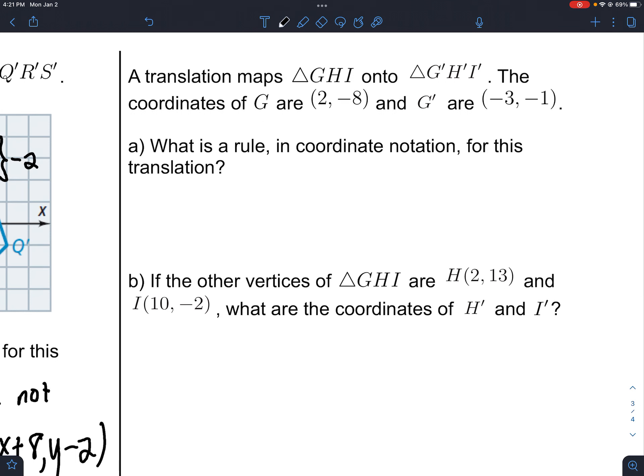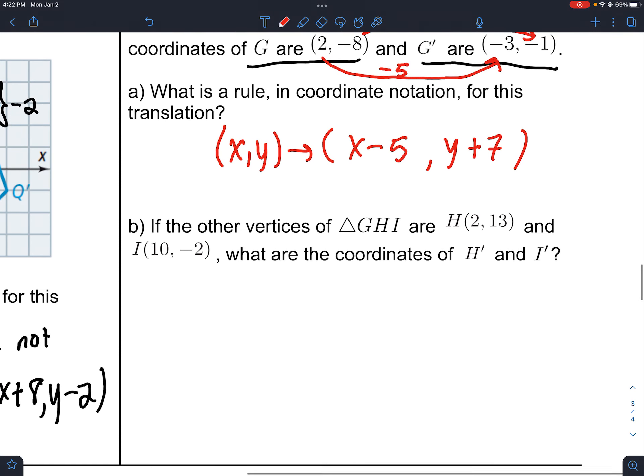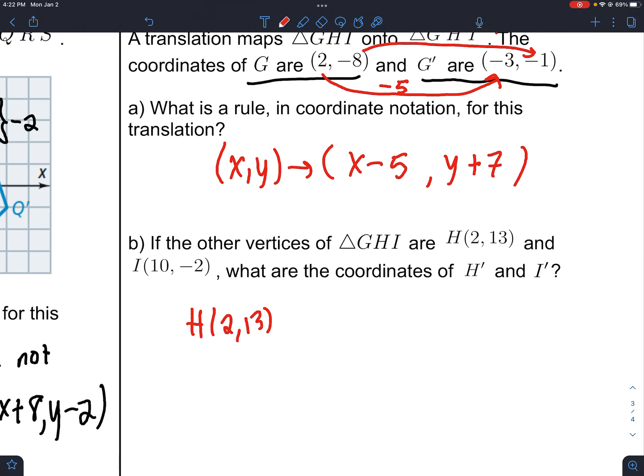Let's have this be the last one. It doesn't give us a picture, but it does give us one point and its image. The difference here looks to be that we take away 5 and that we add 7. So when I write my rule in coordinate notation, not big T notation, I think we need to subtract 5 from x and add 7 to y. Now it's saying, let's say you knew the other points of that triangle. Where do they go? They're going to go to H prime and I prime, and we're going to follow the rule, which says to take away 5 and add 7.